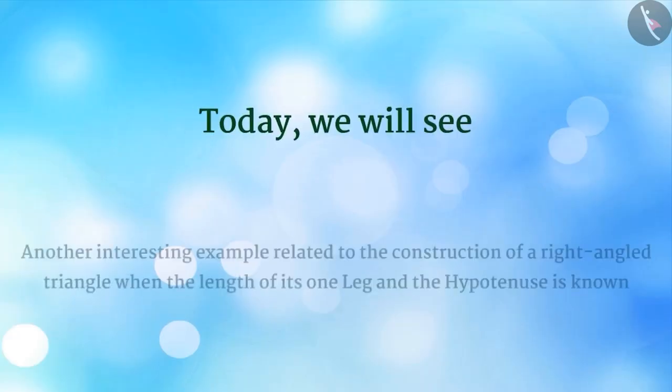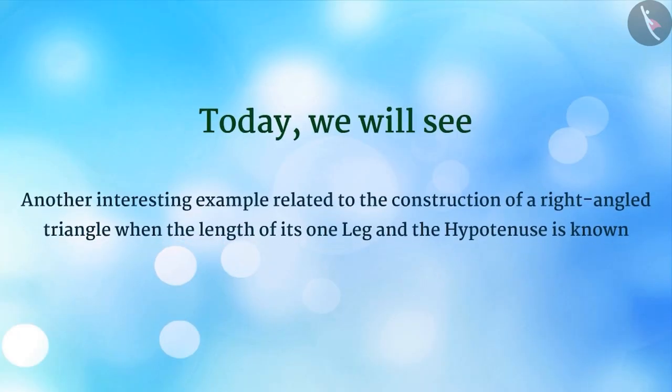Today we will see another interesting example related to the construction of a right-angled triangle when the length of one leg and the hypotenuse is known. Let's look at an example for this.